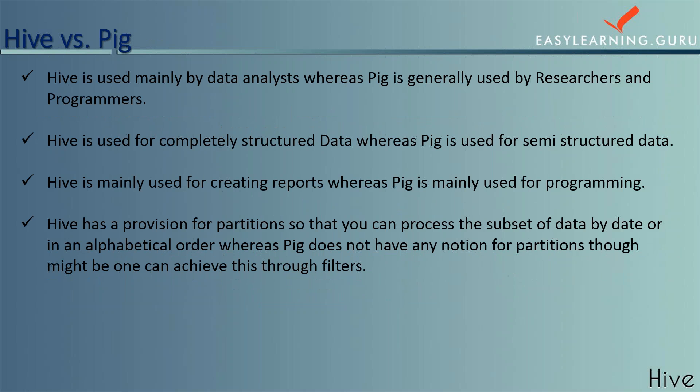Moving on to Hive versus Pig: Hive is basically used by data analysts whereas Pig is used by researchers and programmers. Hive is used for completely structured data while Pig is used for semi-structured and unstructured data. Hive can also be used for semi-structured data, but Pig in addition can deal with unstructured data.